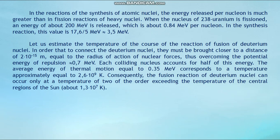In the reactions of the synthesis of atomic nuclei, the energy released per nucleon is much greater than in fission reactions of heavy nuclei. When the nucleus of U-238 is fissioned, an energy of about 200 MeV is released, which is about 0.84 MeV per nucleon. In the synthesis reactions, this value is approximately (17.6 / 5) MeV ≈ 3.5 MeV.